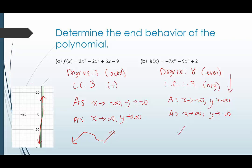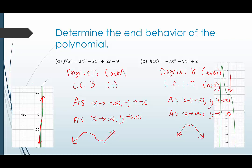So the graph will go down in both directions with things happening in the middle. And we can see from the graph that it's going down on the left and down on the right, as predicted.